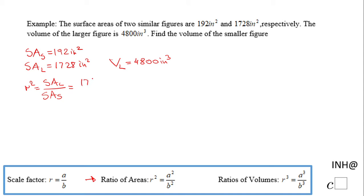You can do the other way, the small over large. I think it's better to do it large over small if you have that choice. We end up with this quotient: 1728 over 192. I'll suggest you, first of all, if it's possible, grab a calculator and do this division. If it's not, simplify. Either way, you're going to get in this case 9 over 1, so r squared is 9 over 1.